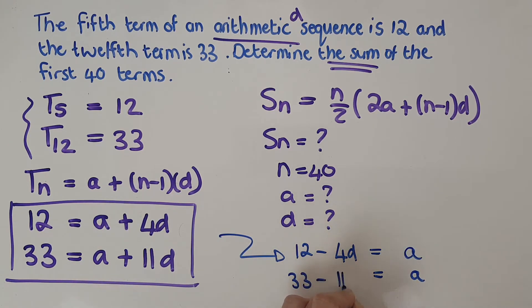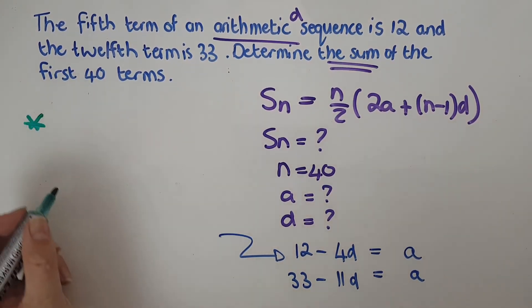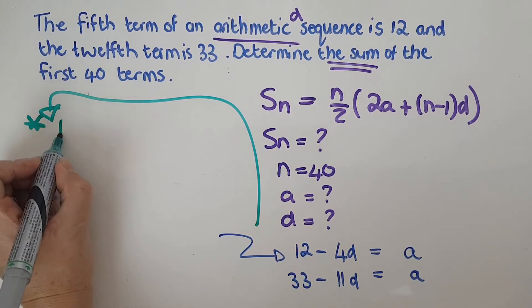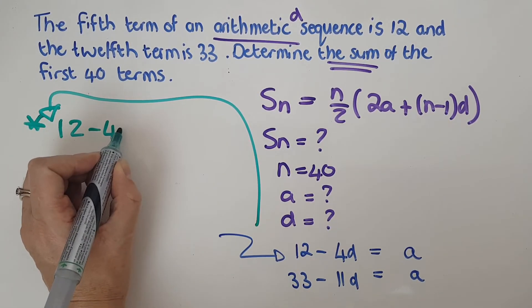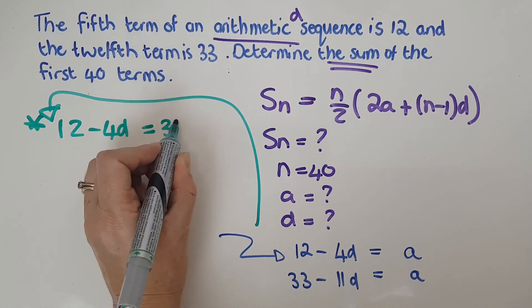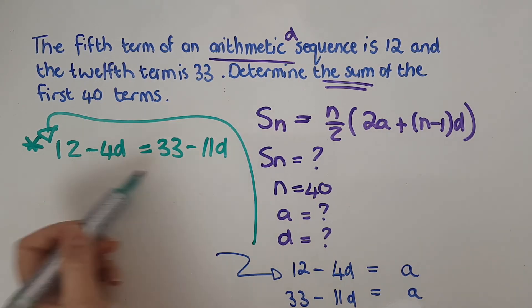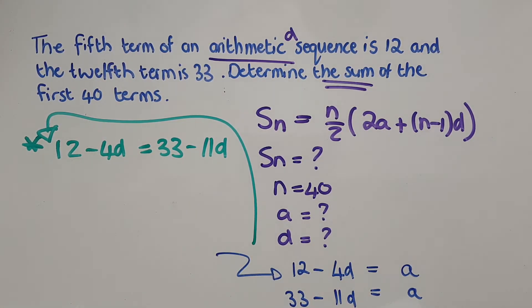minus 11d. If a is that and a is that, then these two things are equal to each other. So I'm going to say 12 minus 4d equals 33 minus 11d. Both of the a values will be exactly the same.